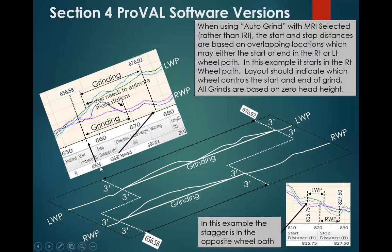This plot from version 3.6 shows where it combined the two wheel paths. When I ran this same profile in version 3.5, I got a start location after that point and a stop location further down the road. Version 3.6 just gives the outer limits of the overlapping grinds. Those are the primary differences between versions 3.5 and 3.6, and that's the end of this video — we'll move on to the next.